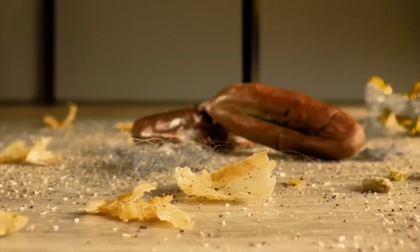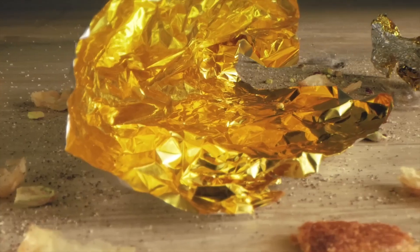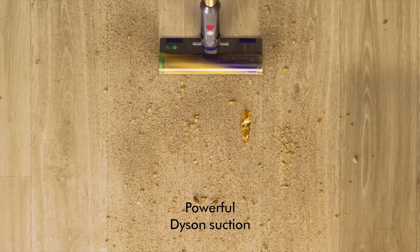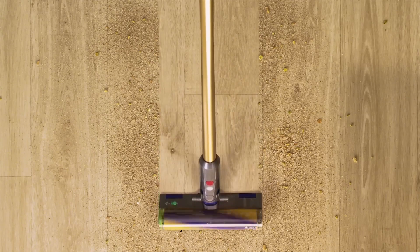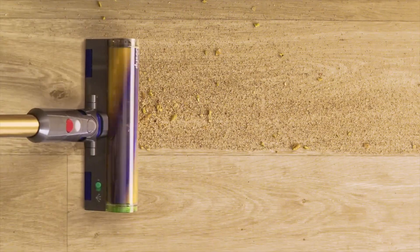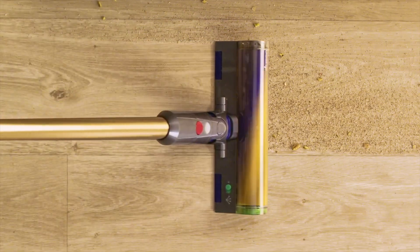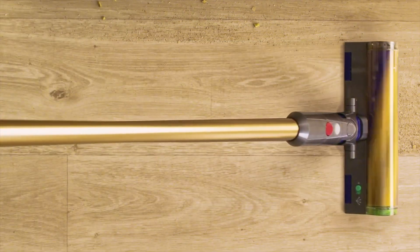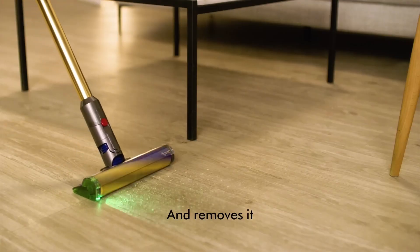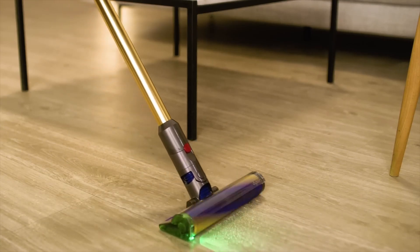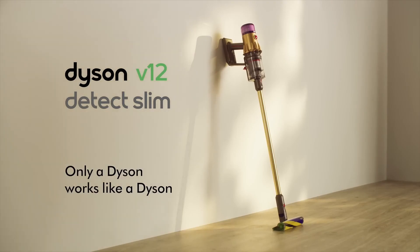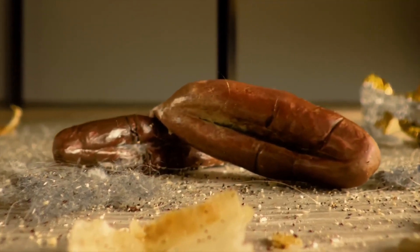In terms of specifications, the Dyson V12 Detect Slim is powered by Dyson's latest motor technology, which provides powerful suction to effectively lift dirt and allergens from both carpets and hard surfaces. With a suction power of 150 air watts, it outperforms many of its competitors in its category, ensuring that even the most stubborn dirt is no match for this vacuum. The V12 is also equipped with a HEPA filtration system that captures 99.97% of particles as small as 0.3 microns, making it an excellent choice for allergy sufferers or anyone concerned about indoor air quality.